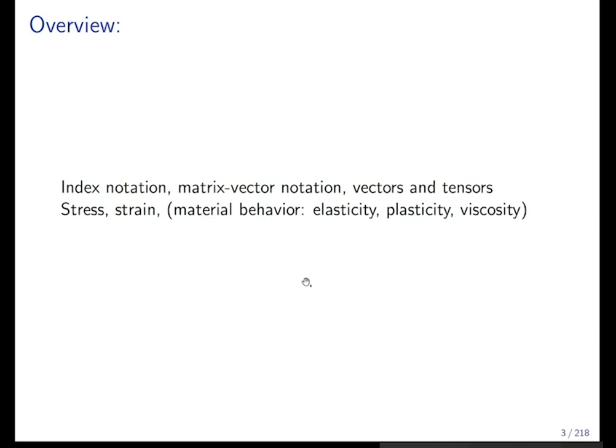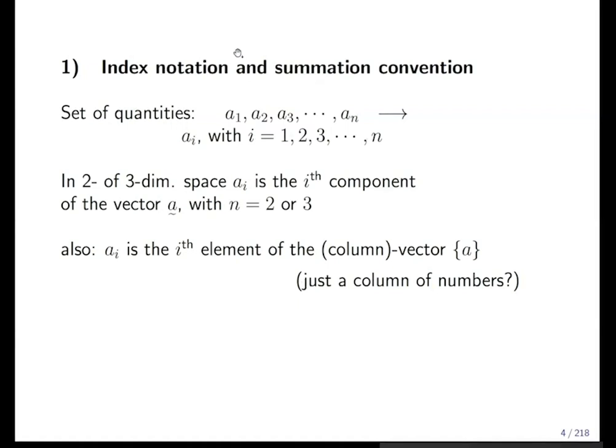What is the index notation? A set of quantities we can write as a1, a2, a3, many more up to an. We call ai the objects, the elements, and i is running from one to n. So if you put ai, it's the placeholder for a long list, possibly a long list. In two dimensions, ai would be only a1 and a2. In three dimensions, ai would be a1, 2, and 3.